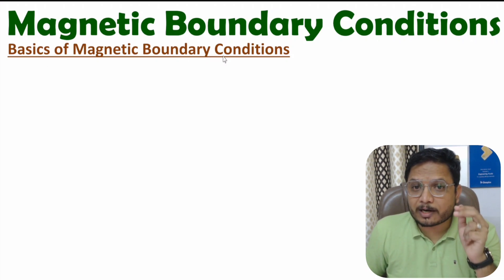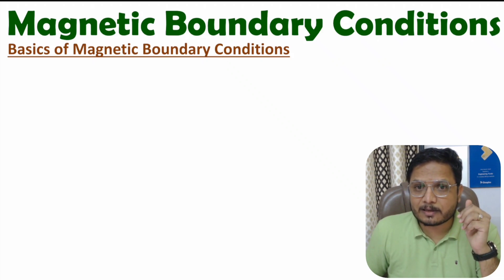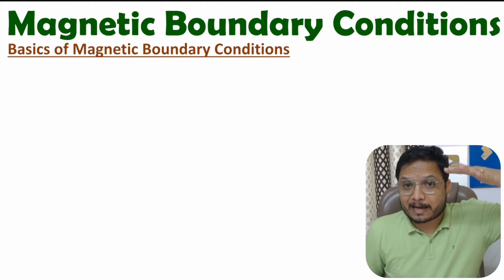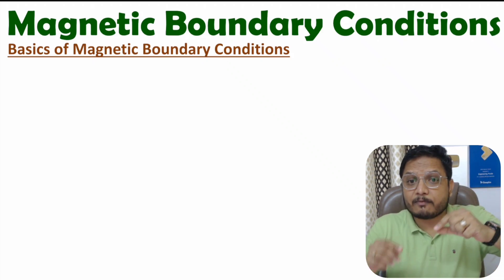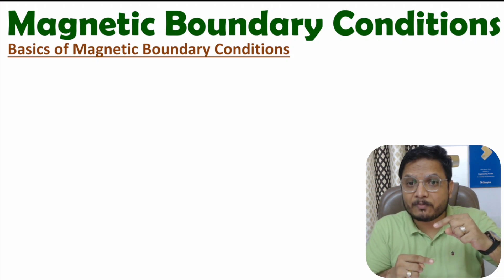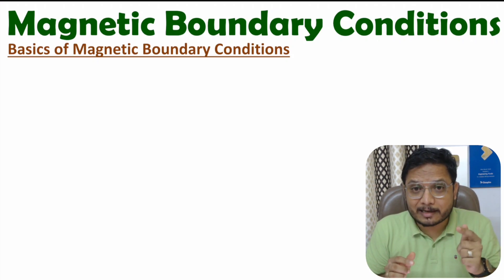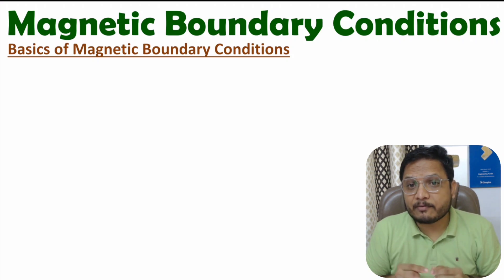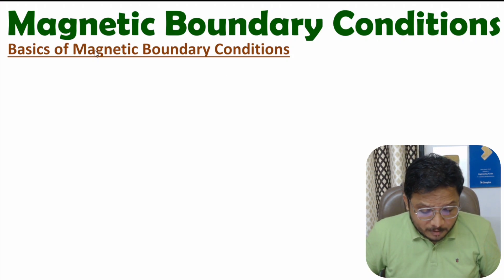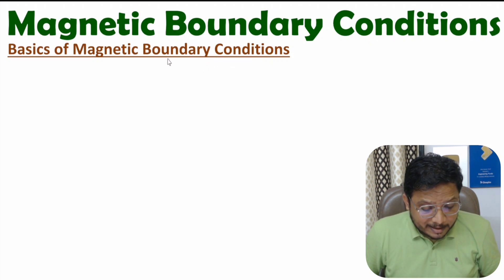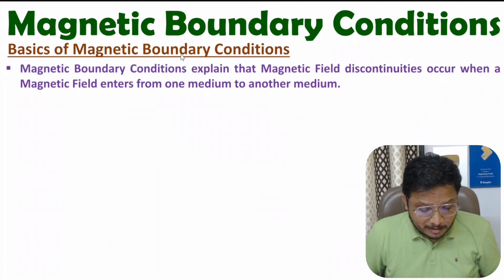First of all, one should know what magnetic boundary conditions are. When a magnetic field enters from one medium to another medium, how much discontinuity there is with the magnetic field — that can be identified by magnetic boundary conditions. So magnetic boundary conditions help us identify discontinuities when a magnetic field enters from one medium to another.